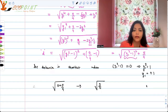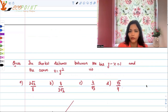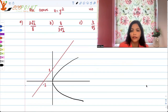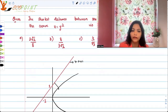Similar to what we just did, let's work on another question based on the same kind of concept. Shortest distance between the line y − x = 1 and the curve x = y². The shortest distance is basically the perpendicular, or the length of the common normal.